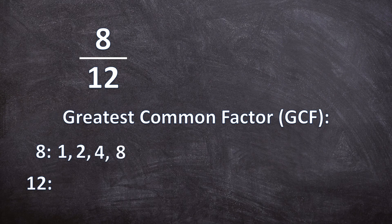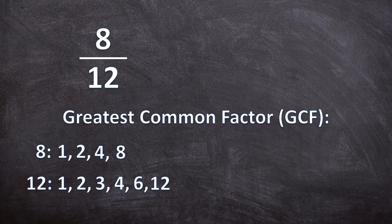What can go into 12? One, two, three, four, six, and 12 can go into 12. Now we just search for the highest common factor — the highest factor they both have — and that is four.